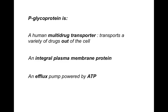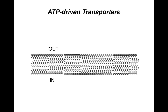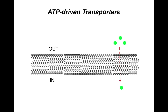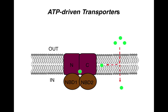PGP is an integral plasma membrane protein because it contains transmembrane alpha helices, and it is an efflux pump — it pumps in an outward direction powered by ATP. Here you can see the drug entering the cell; this is the outside of the cell, this is the inside, and this is the plasma membrane. As the drug enters the cell, it is recruited by the transporter from the lipid bilayer itself and binds to the substrate binding site in the transporter.